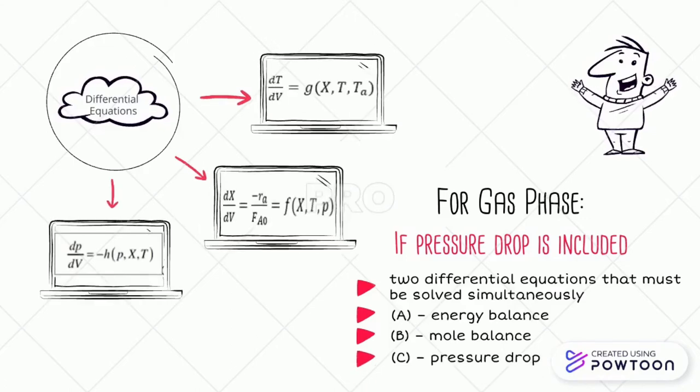If we have a pressure drop, pressure drop equation C must be included and used to solve simultaneously with the other two equations A and B.